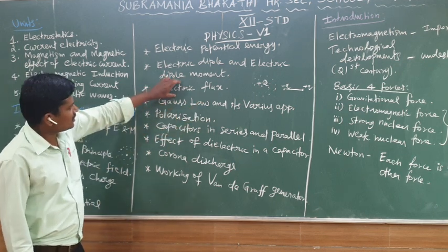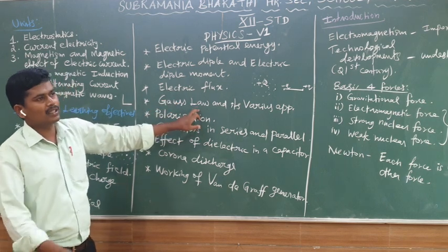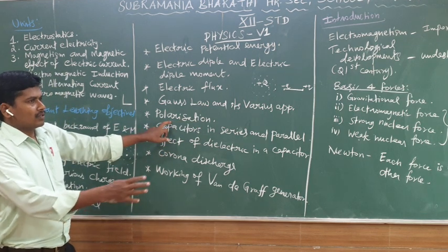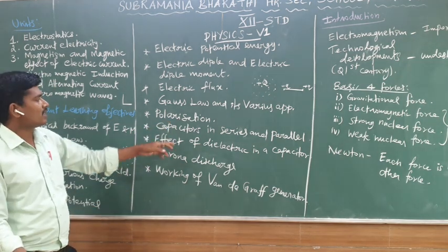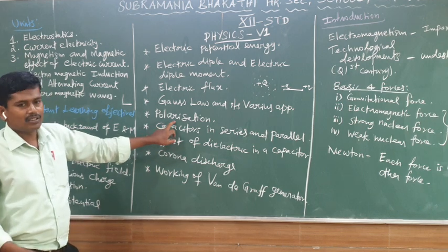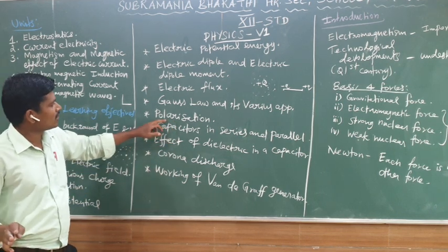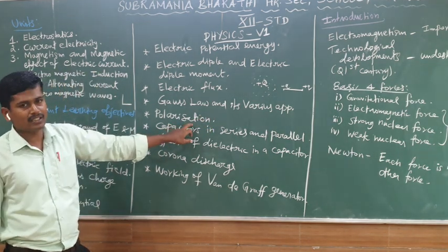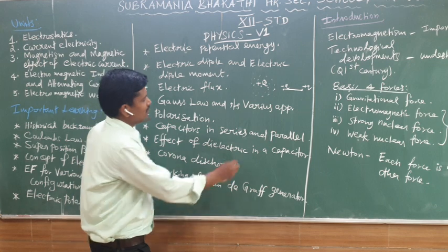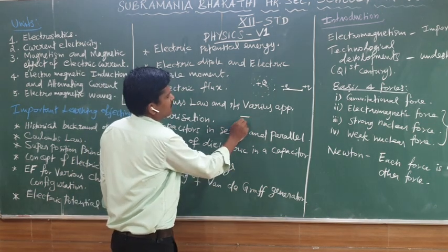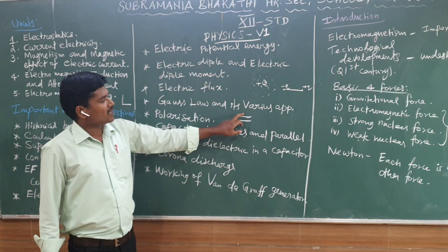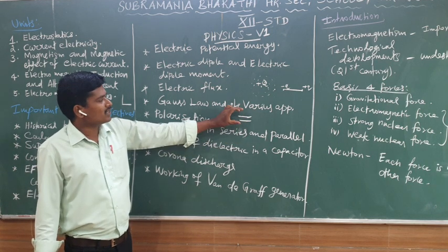Next, Gauss's law — electric flux relates to the enclosed charge. Gauss's law has many applications. Next is polarization: on a surface or volume, many charges are distributed in different directions. We have to orient them using an electric field — that process is called electric polarization. Capacitors come in different shapes; first is the parallel plate capacitor. We need to create a positive charge and a negative charge to create a capacitor.